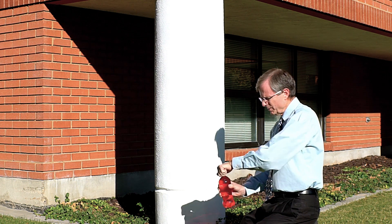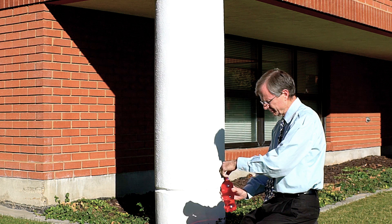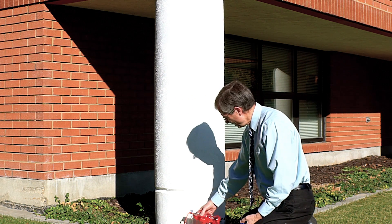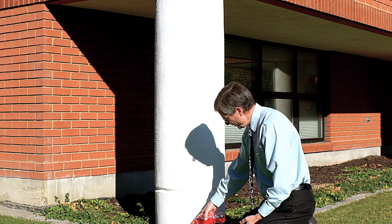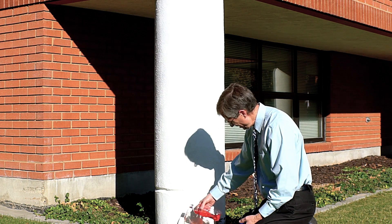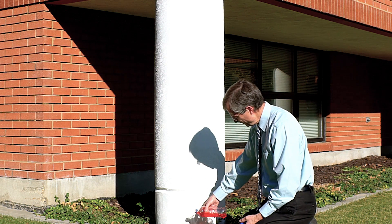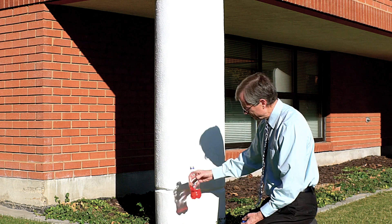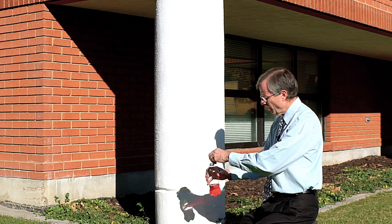But if you pour out a lot of the water, we're going to water these plants with water with red food coloring in it. So now we're down to about a third or a quarter full of water.